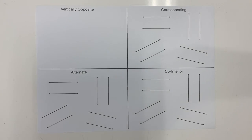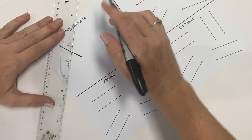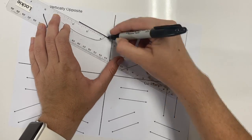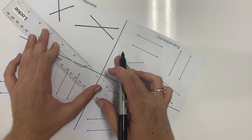For vertically opposite, you're going to draw some lines that cross over each other, and we're going to draw them at different angles. Two or three is perfect.